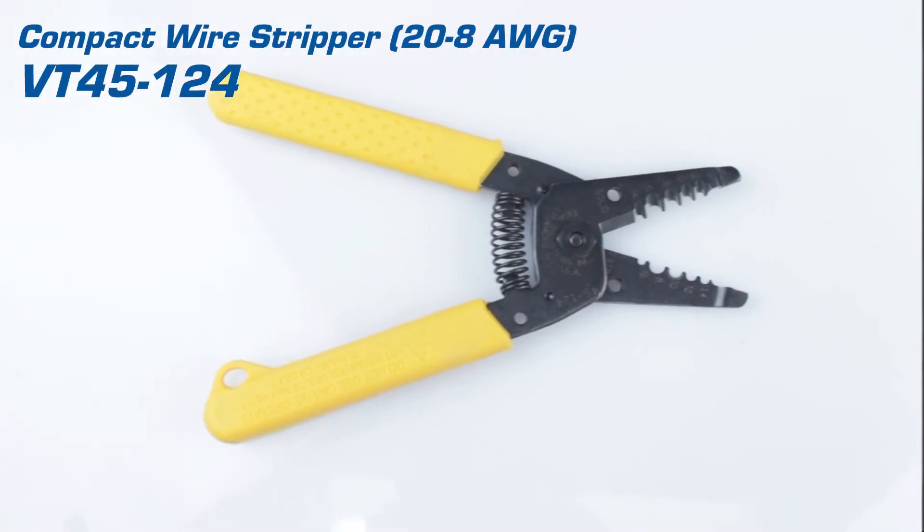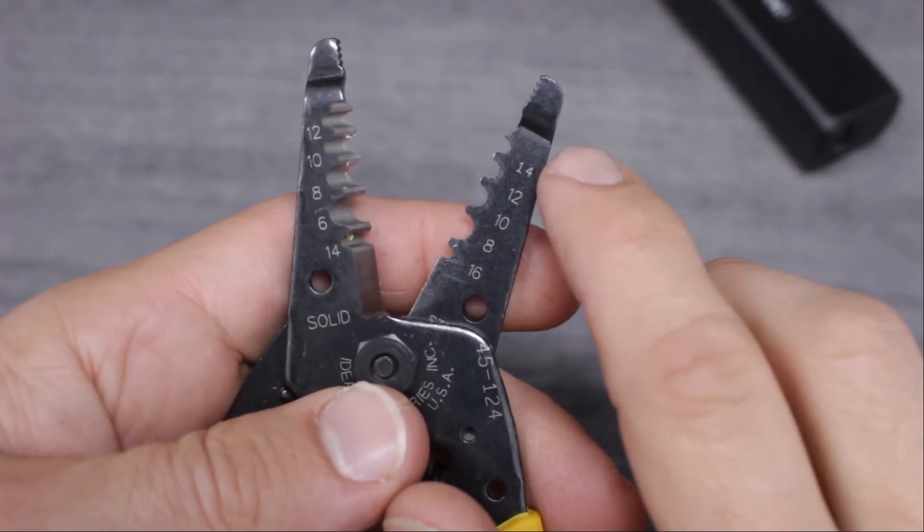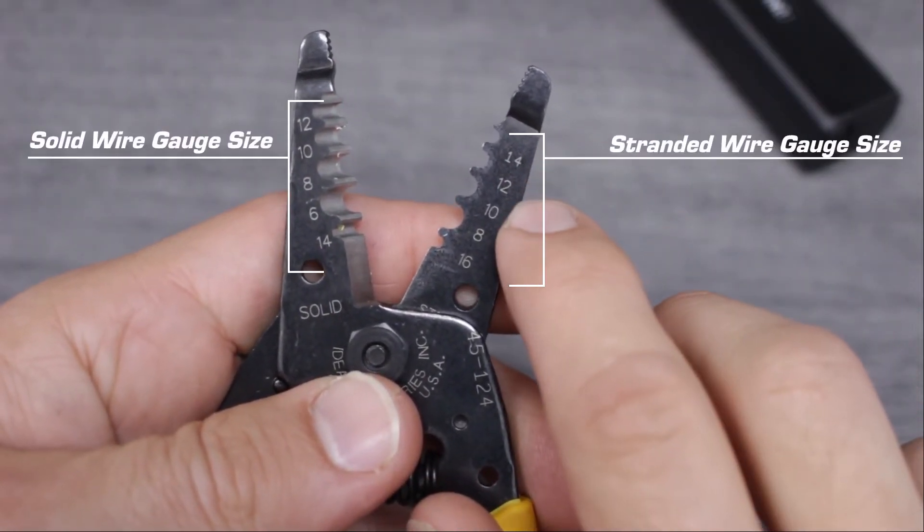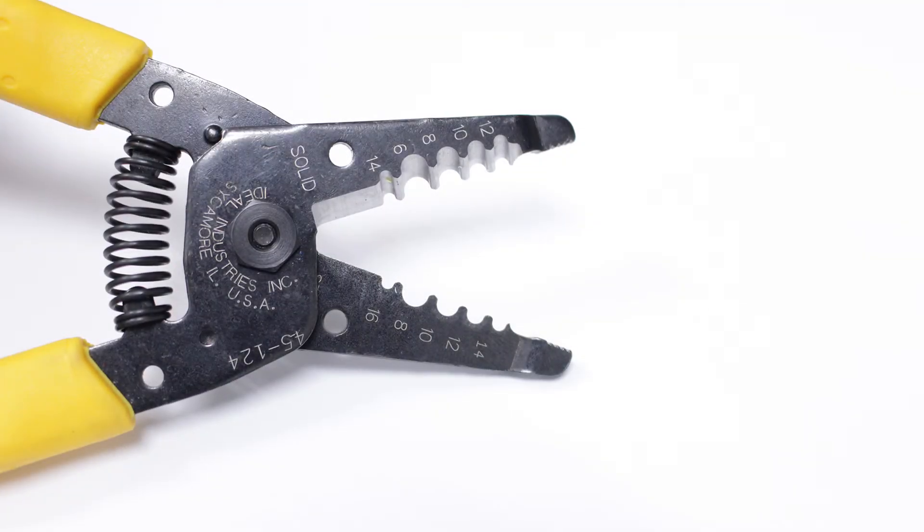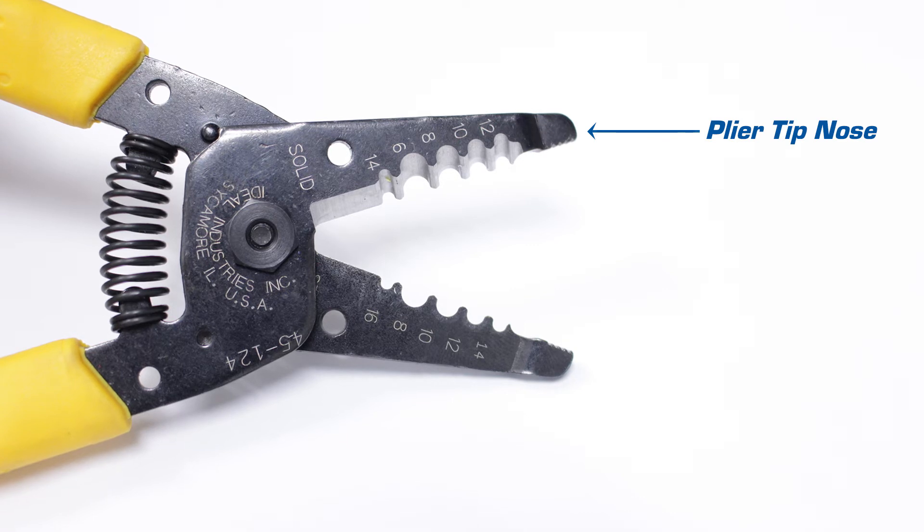Our compact wire stripper is built for longevity. This tool offers multiple cut nests to handle a wide range of wire sizes. It also has a tapered plier nose that can be used to grip, twist, bend, or pull.